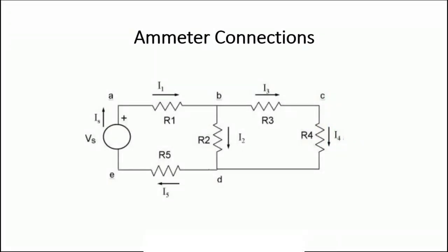The last one is I5, the current flowing through R5. You can connect the ammeter either way and the value will remain the same. The negative of the ammeter is connected with the negative of the supply, and the positive of the ammeter is connected with R5. Once we have calculated all values of I1, I2, I3, I4, and I5, we substitute them into the node equations to verify Kirchhoff's current law practically.